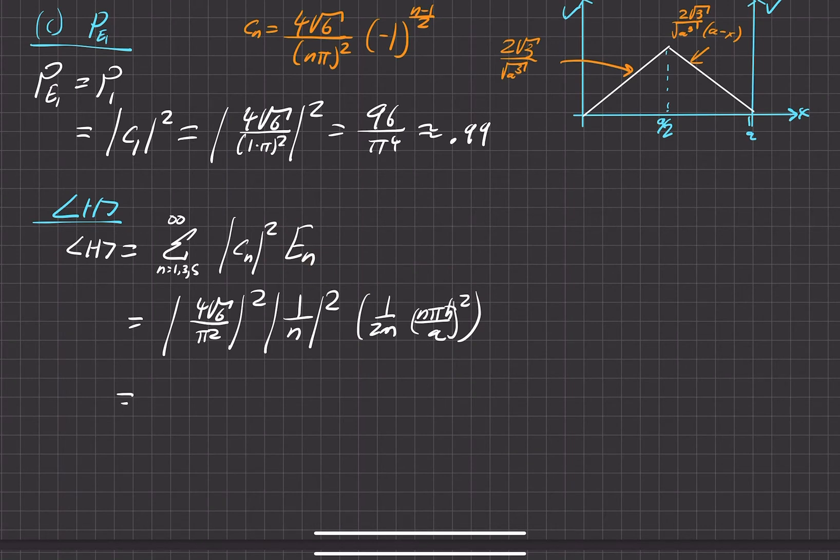So we'll just go ahead and just do some of the math. If you remember, this was actually just what we did up the top. So that was, let's see here, 96 over pi to the 4th, right?